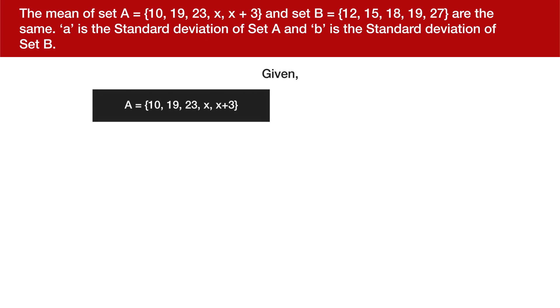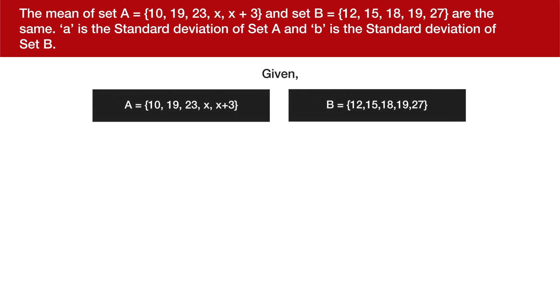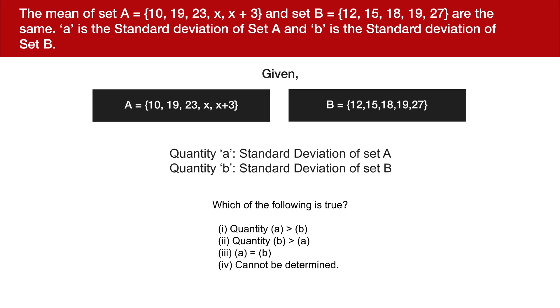Now here's your question. The mean of set A and set B are the same. Quantity A is standard deviation of set A, quantity B is standard deviation of set B. Which of the following is true from the below statements?